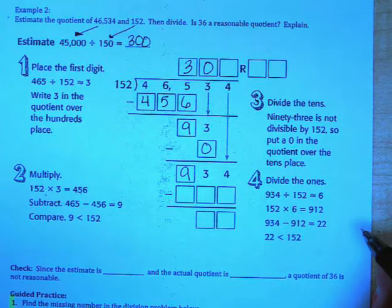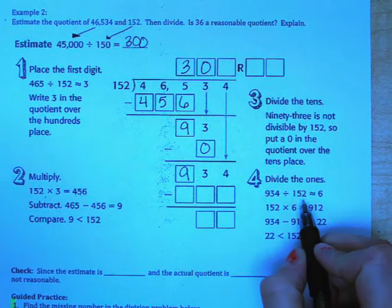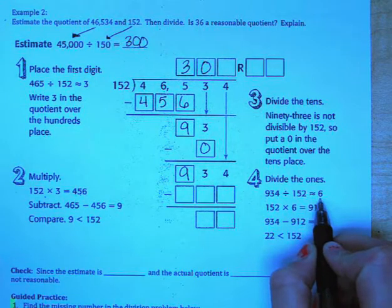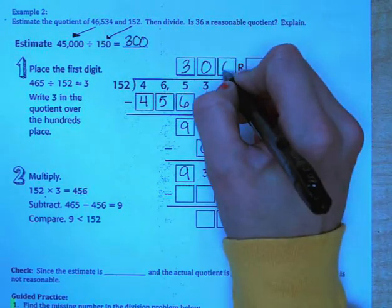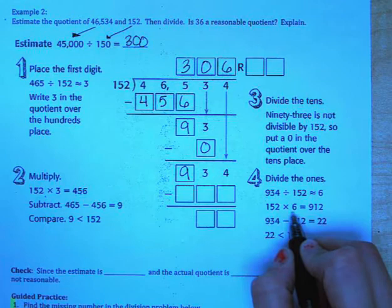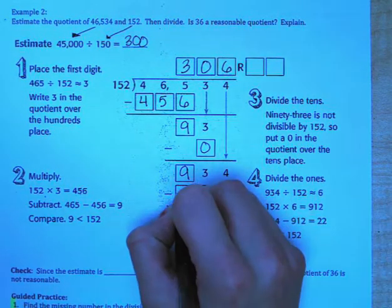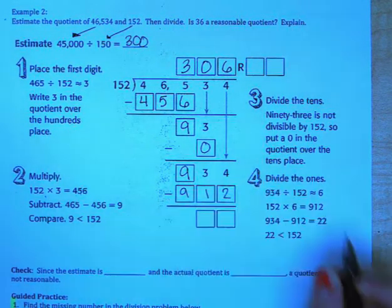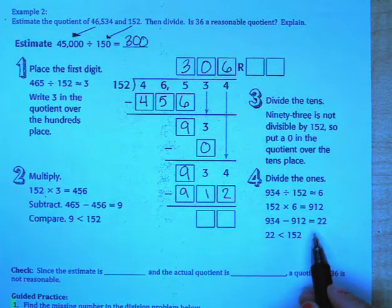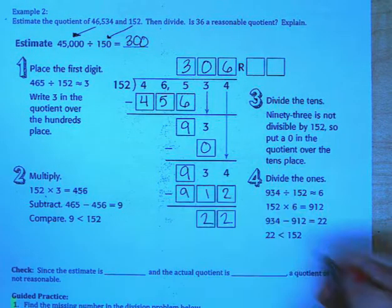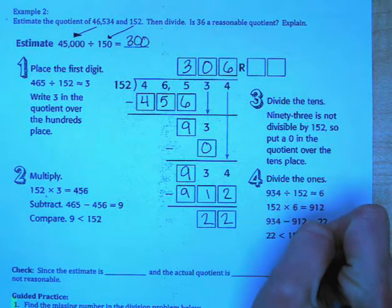We need to divide the ones place. 934 divided by 152 is approximately 6. So we're going to write a 6 up here. 152 times 6 is 912. When you do 934 minus 912 you're left with 22.